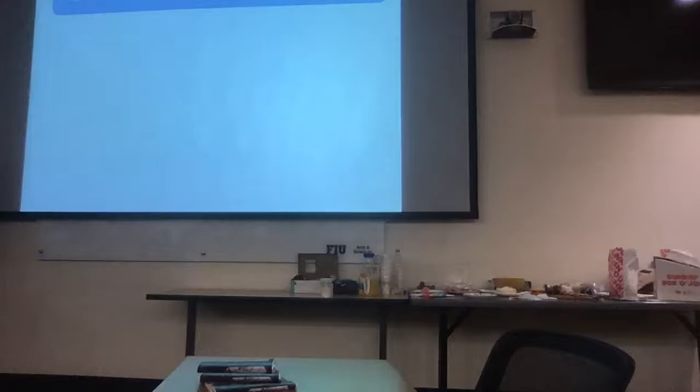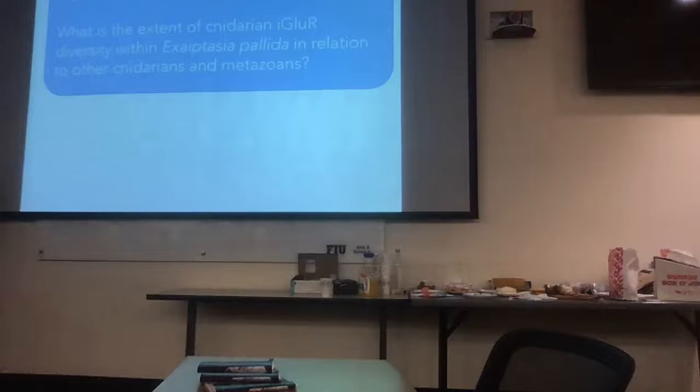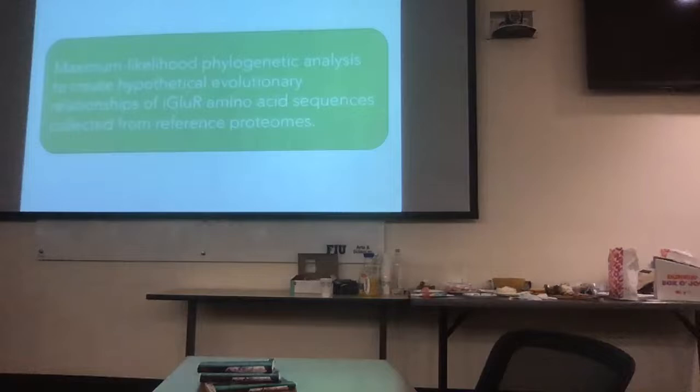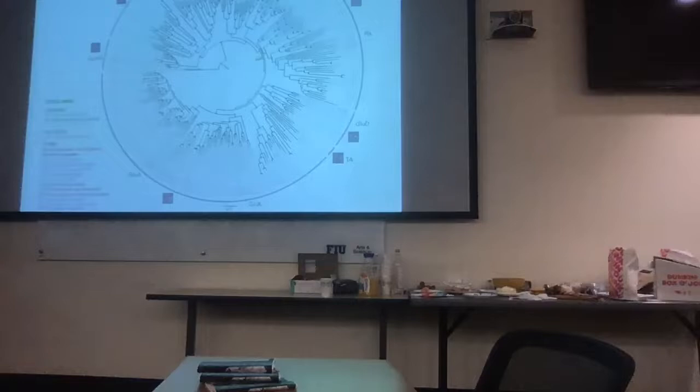The first question: how have iGluRs changed over time? What is the extent of cnidarian iGluR diversity within Exaptasia in relation to other cnidarians and metazoans? This is a comparative study to reveal the diversity and different evolutionary relationships. I used phylogenetic analyses using maximum likelihood to create hypothetical evolutionary relationships of iGluR amino acid sequences collected from different reference proteomes.